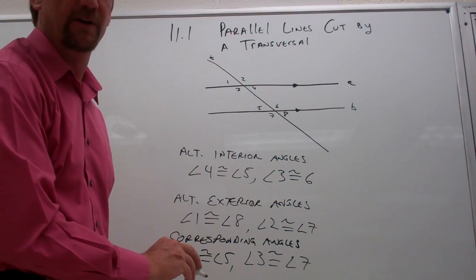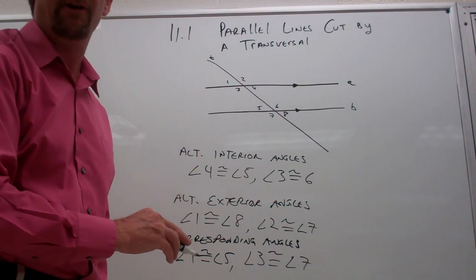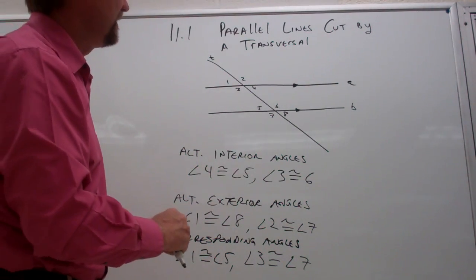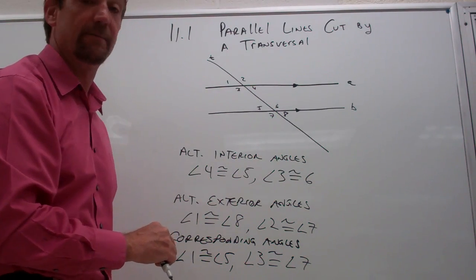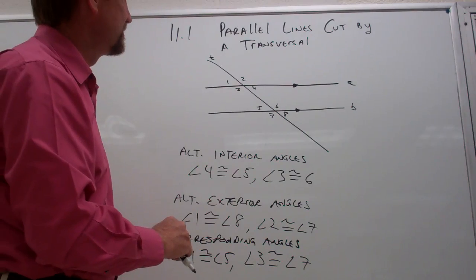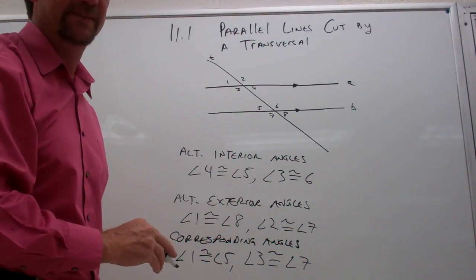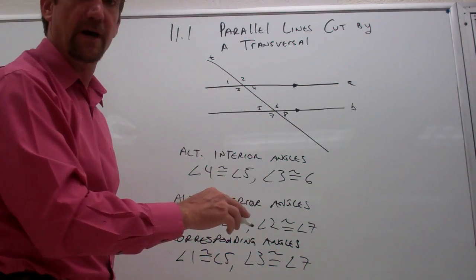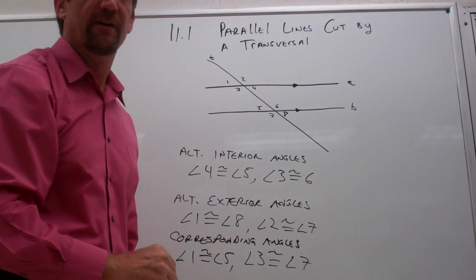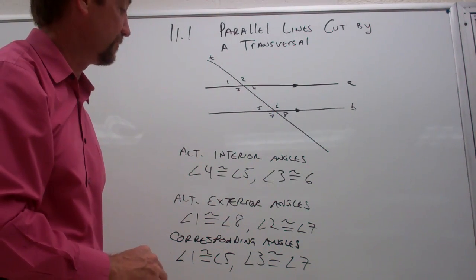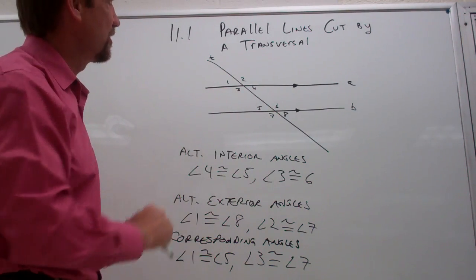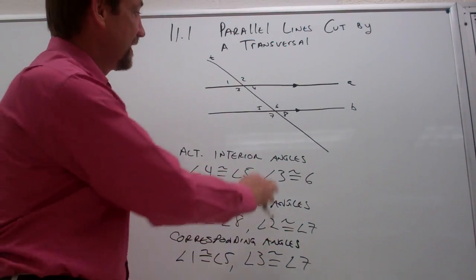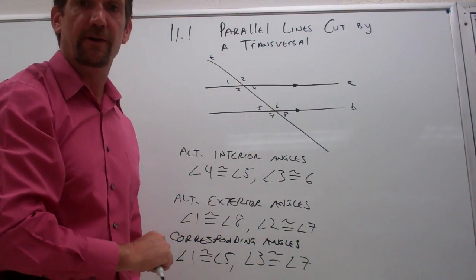The last type of angle we're going to talk about are the same side interior angles. Same side interior angles lie on the same side of the transversal between lines A and B. The neat thing about same side interior angles is that they are supplementary — they will always add up to 180 degrees. For instance, angle three and angle five are same side interior angles and must have a sum of 180 degrees. The other pair is four and six. So there's some of the vocabulary you're going to be dealing with as we talk about parallel lines cut by a transversal. Get those words down, understand their meanings, understand which angles are congruent, and eventually if I give you the measure of angle seven, you'd be able to give me the other seven angle measures.